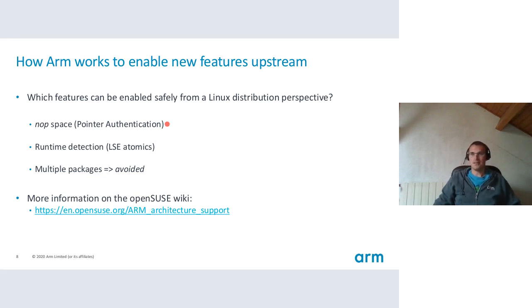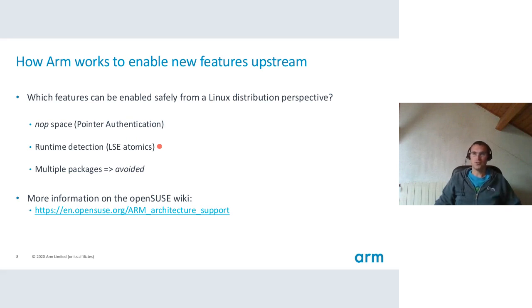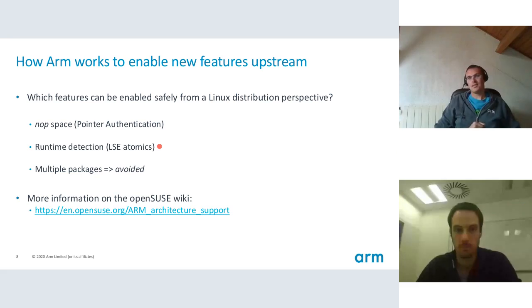But the NOP space approach is not always usable. For example, for LSE Atomics we need to do a runtime detection and choose a path — either a legacy path for ARMv8.0, or another one for LSE Atomics-enabled hardware.